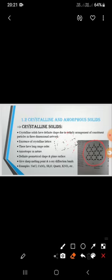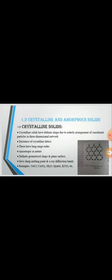Examples of crystalline solids include NaCl (salt), copper sulfate, quartz, and potassium nitrate (KNO₃). These all have definite crystalline structures. To summarize, crystalline solids have definite shape due to their 3D dimensional structure, they form lattice structures, they have long-range order, and they have definite shape and sharp melting points.